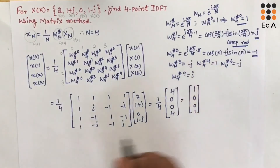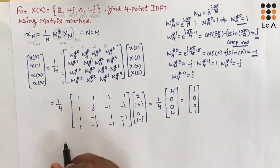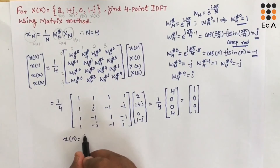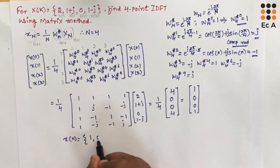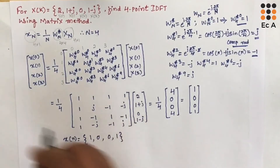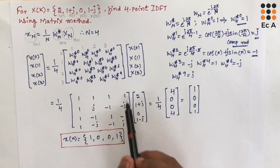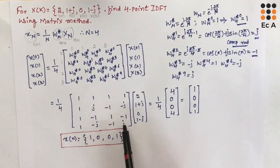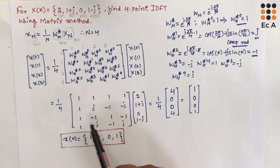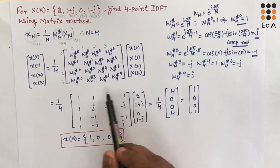So the IDFT of the given sequence is x(n) = {1, 0, 0, 1}. The Twiddle factor matrix used here is the standard matrix for 4-point IDFT. If you remember this matrix, there is no need to go through the full calculation each time.